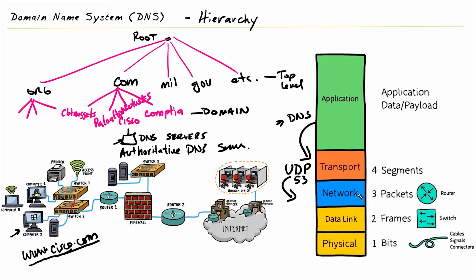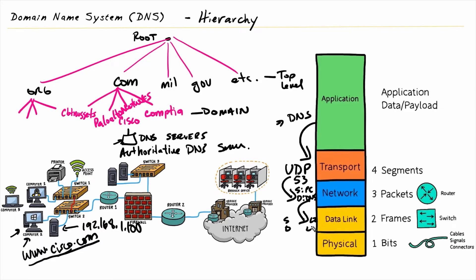That would then be encapsulated with the layer 3 header, which would include the source IP address of this computer and the destination address of our DNS server. Let's imagine our DNS server is at 192.168.1.100. So the source IP would be the PC, and the destination IP would be the IP address of the DNS server. And then it would be encapsulated at layer 2 with the source layer 2 address of the computer and the destination layer 2 address of this local DNS server — which, if it's on the same local network, this computer could just get by doing an ARP request if it's IPv4, or neighbor discovery protocol and a neighbor solicitation if it's IPv6. If that DNS server wasn't on the local subnet, the computer would put the layer 2 address of its default gateway, who would then take the packet and forward it to the DNS server.